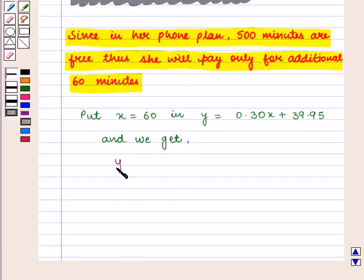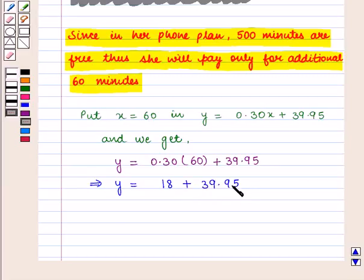And we get y = 0.30(60) + 39.95, which implies that y = 18 + 39.95.